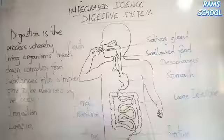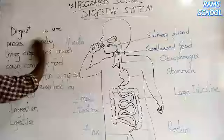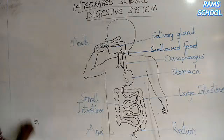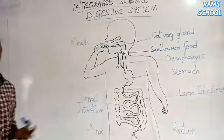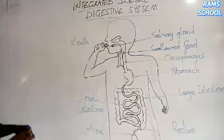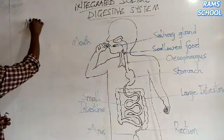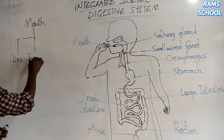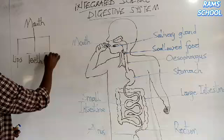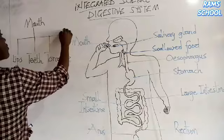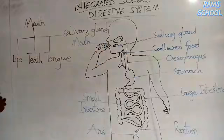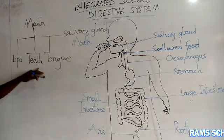Let's start with the mouth. As we all know, digestion begins from the mouth. The mouth has four parts: the lips, the teeth, the tongue, and the salivary glands. These are the four constituents of the mouth.